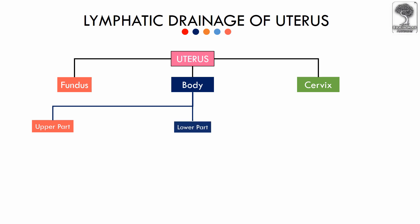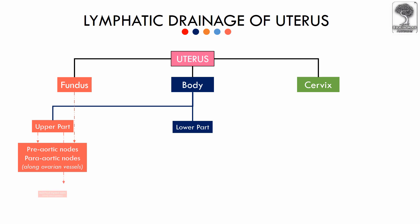As you can see, the fundus of the uterus and the upper part of the body of the uterus drains along the ovarian vessels into pre-aortic and para-aortic lymph nodes. The corner of the uterus drains to the superficial inguinal lymph nodes.